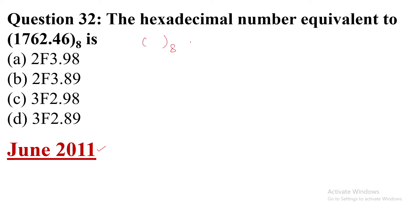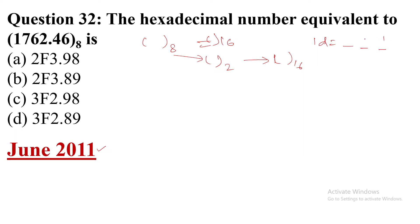Whenever a number is given in octal and we need to convert to hexadecimal, first we convert to binary and then convert to hexadecimal — this is the easiest method. For octal to binary conversion, one octal digit equals three bits in the binary number system, so each digit carries three bits.